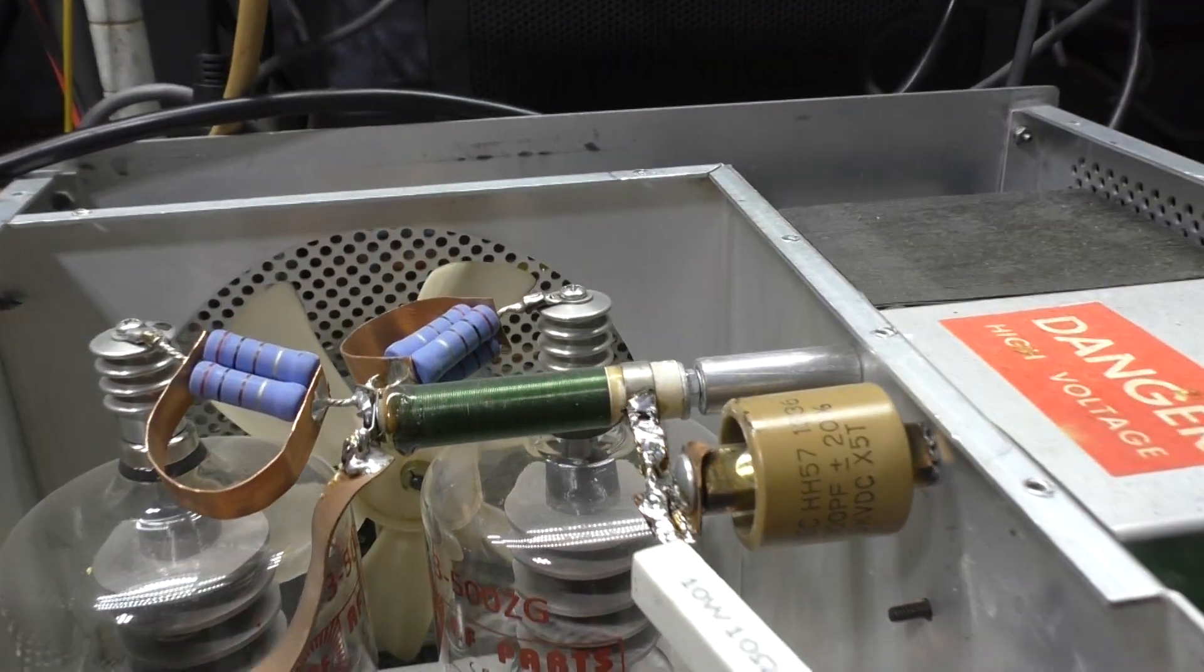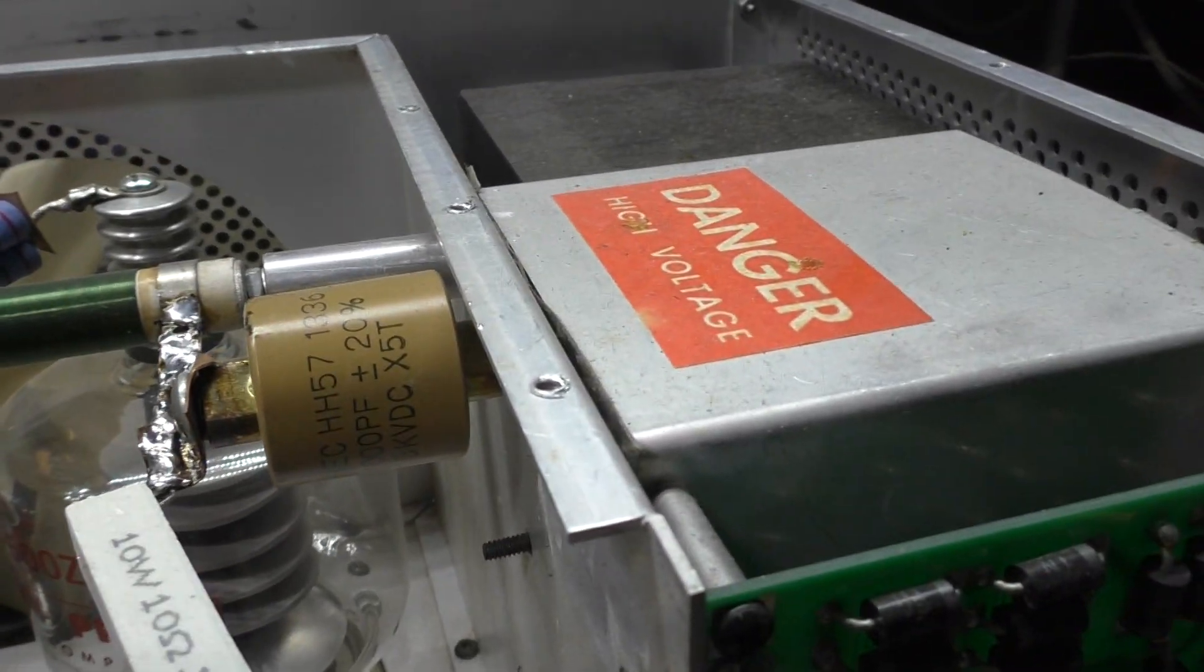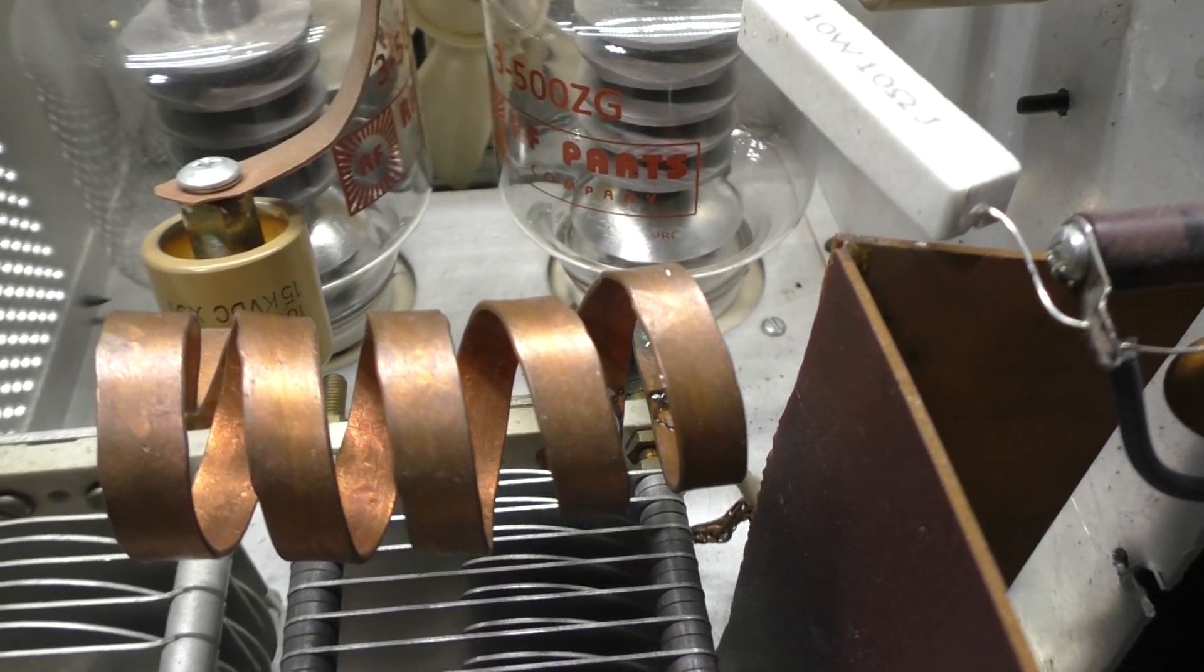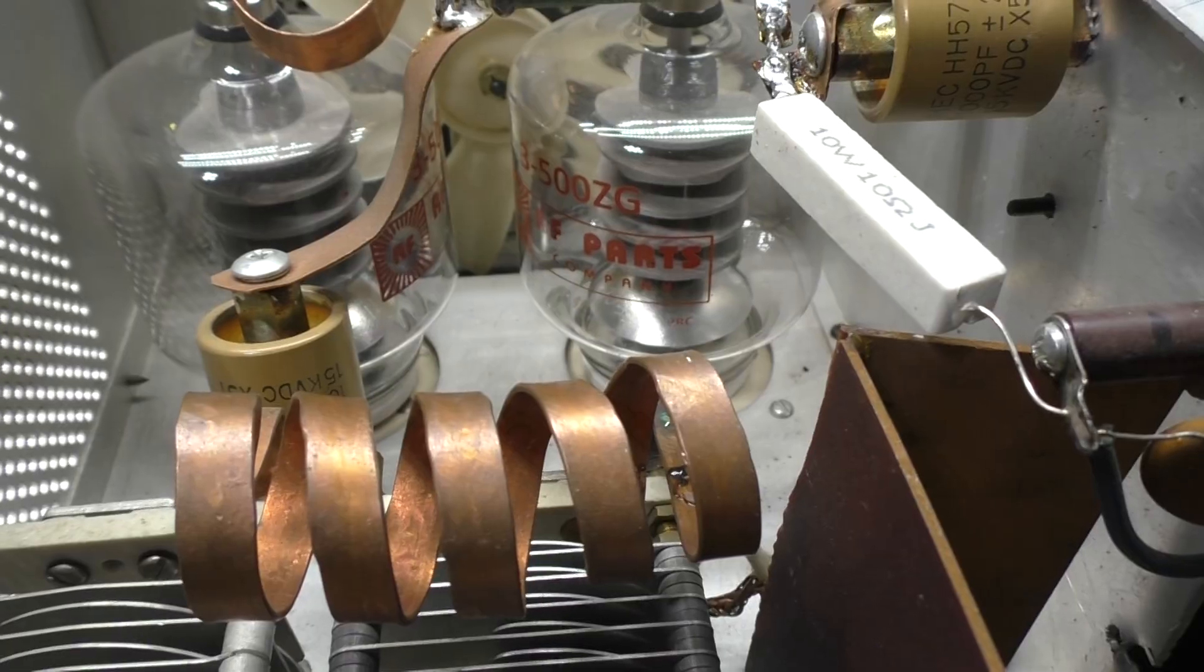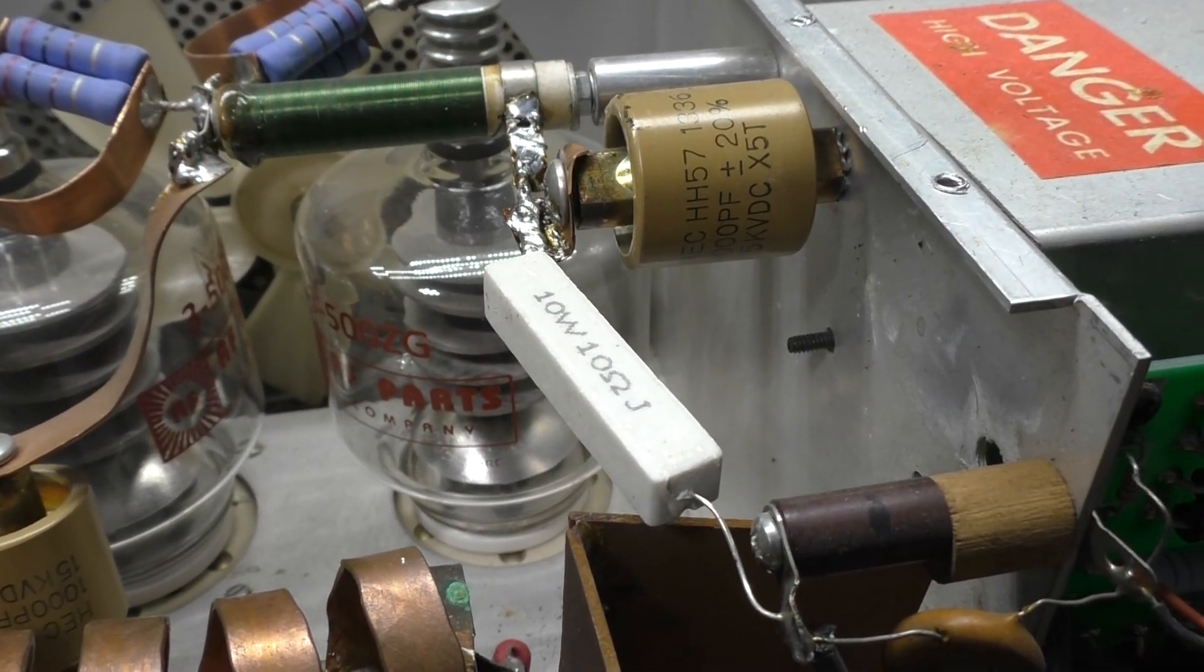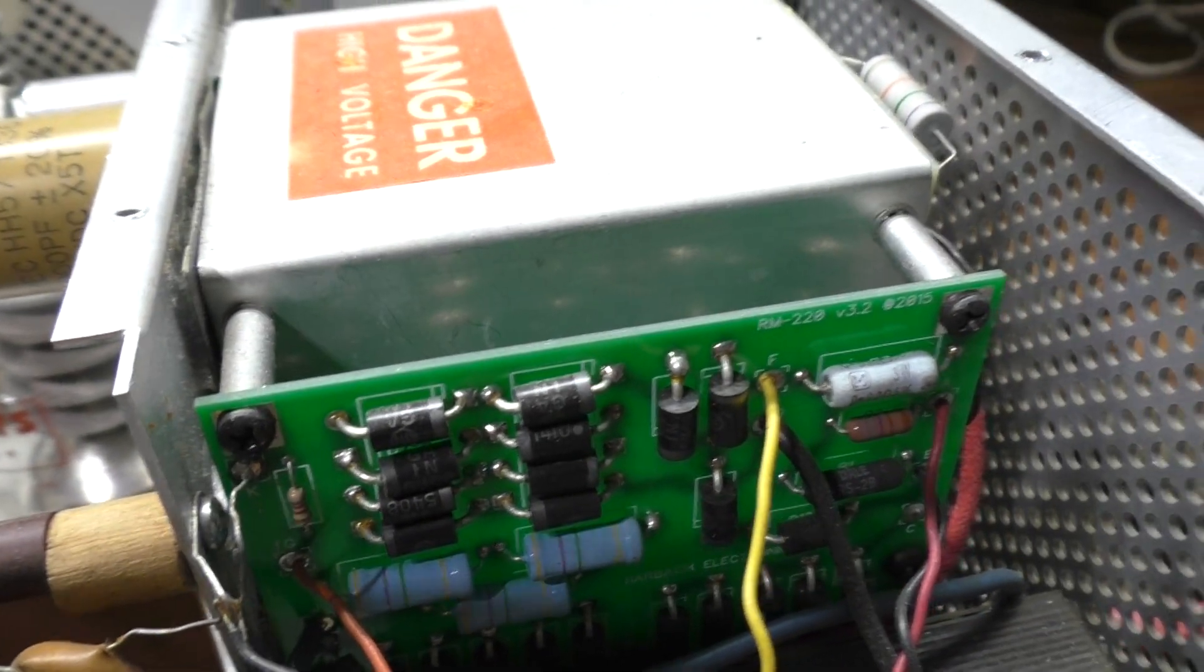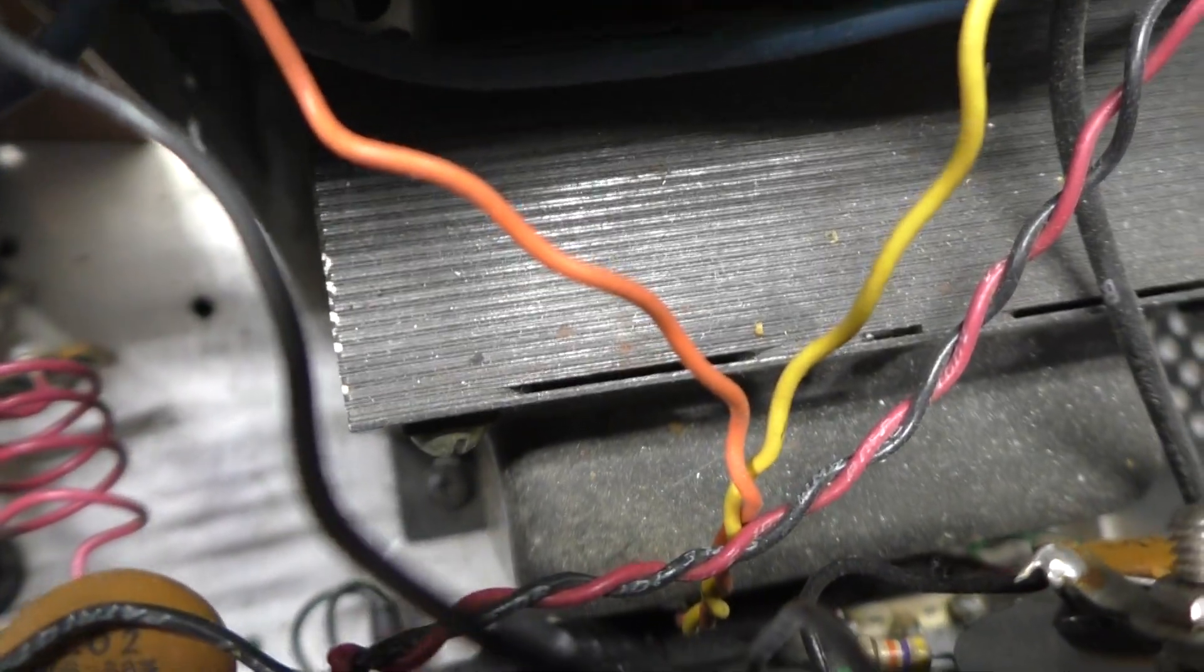It's been modded, not by me. You can see the parasitics and the great big doorknob cap somebody used. It's been 10-meterized—all the band stuff has been taken out and it's a 10-meter coil only. Glitch resistor added, but that's not the best type. Hard block board for the high voltage, that's a good thing.